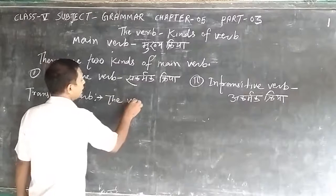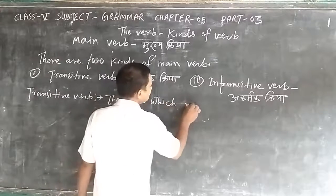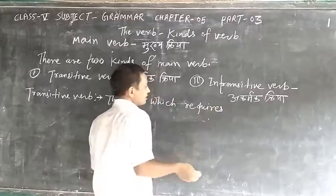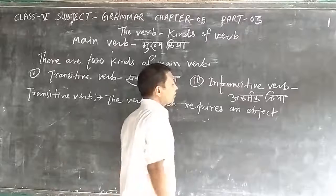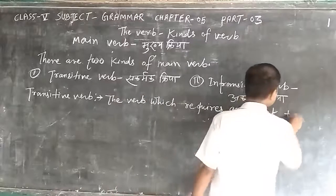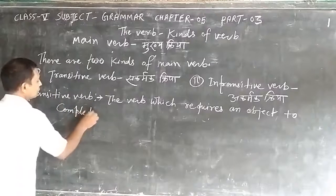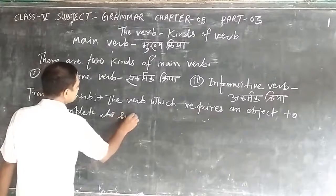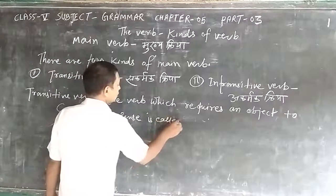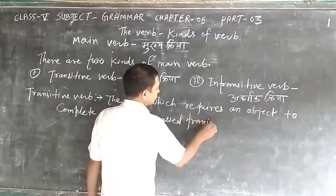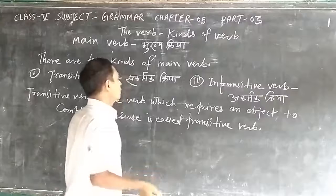Transitive verb: the verb which requires an object to complete its sense is called transitive verb. Here, 'requires' means the verb needs something; 'object' means karma; and 'sense' means arthabhav.